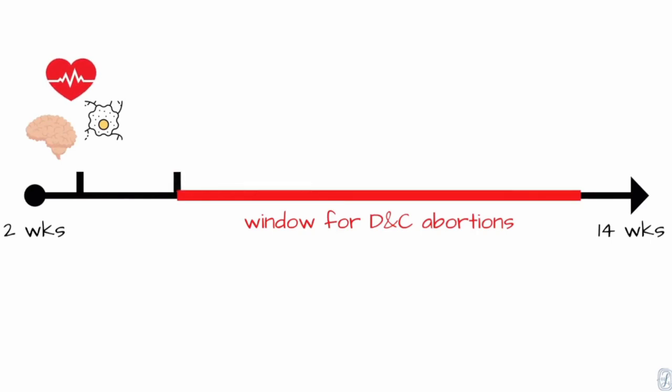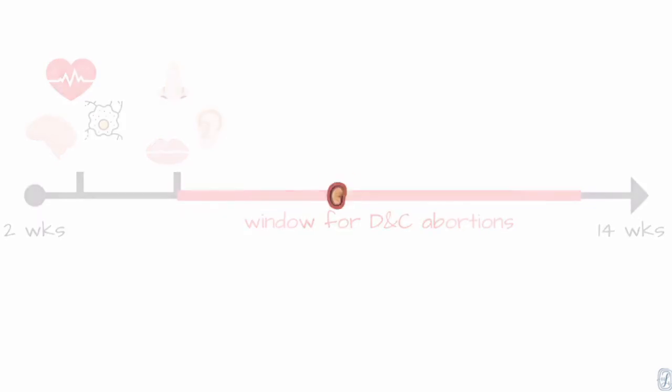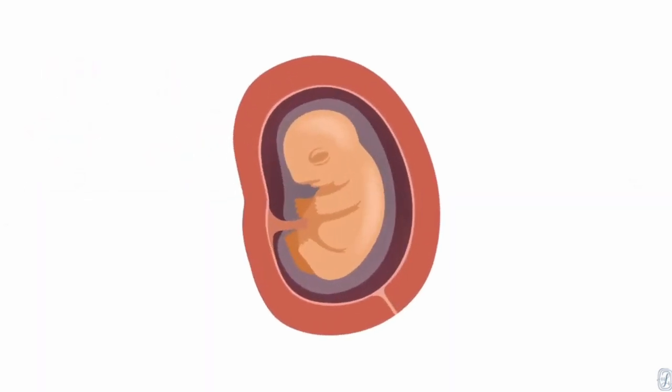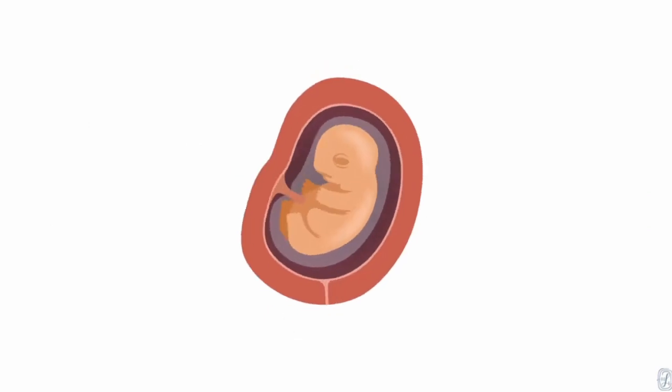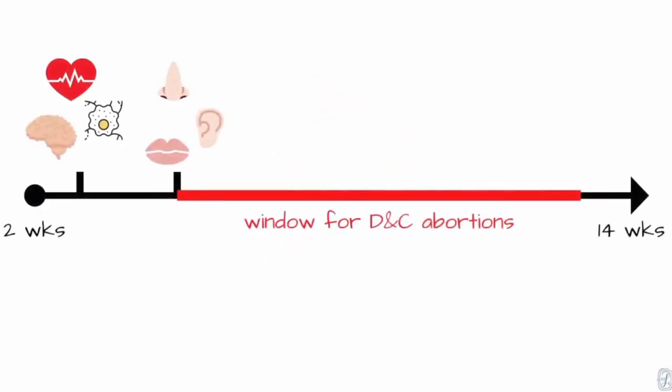By five weeks, the pre-born child's mouth, ears, and nose were taking shape. This development happens before this type of abortion is performed. Much more development happens between five and thirteen weeks.